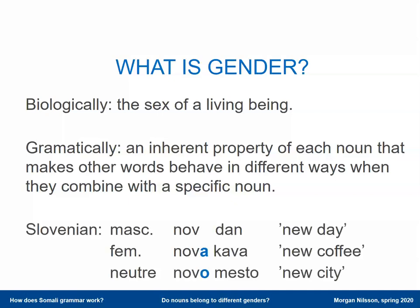As an example, let's take a few words of Slovenian. In Slovenian, the nouns belong to one of three different genders: masculine gender, feminine gender, or neuter gender. And an adjective, like 'new,' has to agree with the noun. It has to show the same gender as the noun it belongs to. So if 'coffee' in Slovenian is a feminine word — kava — then 'new' also has to be feminine: nova. The adjective simply ends in the same sound as the noun: nova, kava.